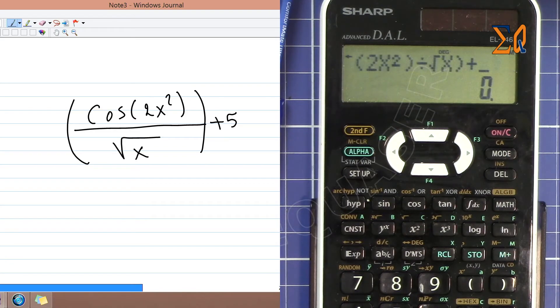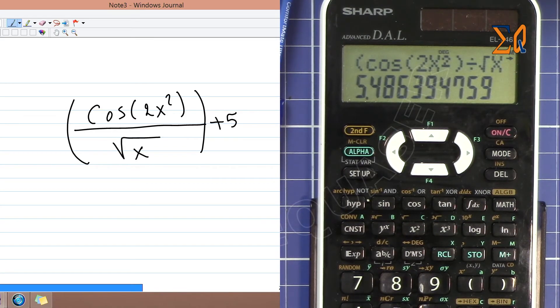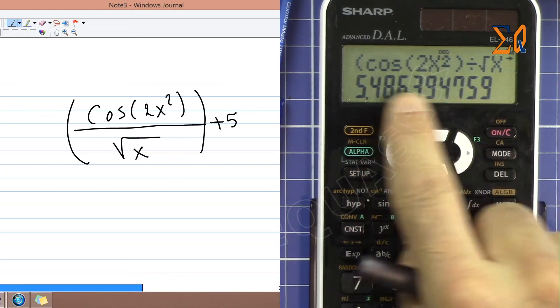And then plus 5, as you can see. So this is evaluated because we have all the X values.